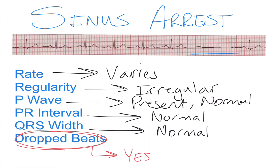We want to know what the P2P interval is before the pause and what it is afterwards. It's difficult to see with this strip because it doesn't continue on, but for our purposes we're assuming that with sinus arrest, the P2P interval before does not line up with the P2P interval after — and that is the defining characteristic of sinus arrest.